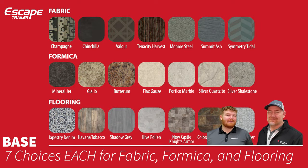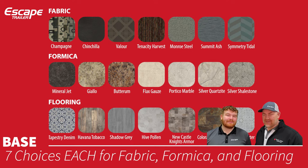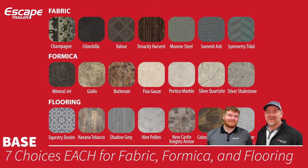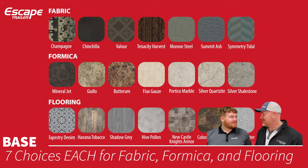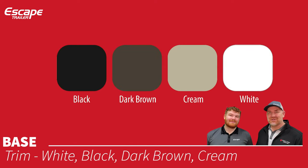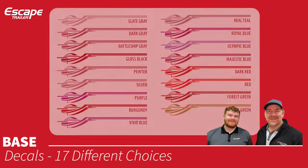For fabric, Formica, and flooring you have seven different choices each, enabling a huge number of combinations to make your trailer your own. Up until a couple of years ago there was essentially one choice of each, but we've since expanded to seven options all within the base price of the trailer. For trim — which goes around your countertops, tabletop, or counter extensions — we have four colors: black, cream, dark brown, and white.